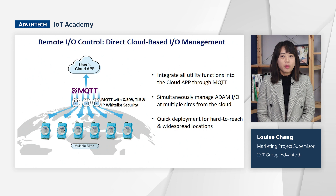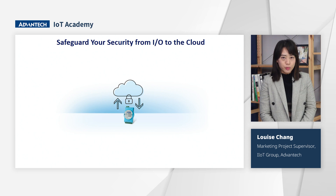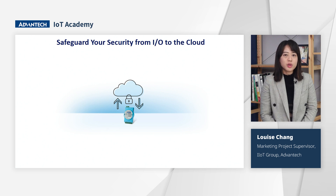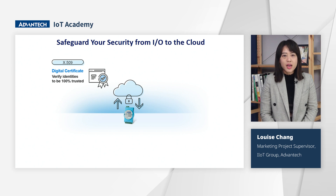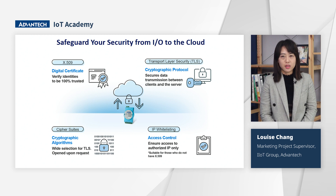This mass deployment capability is particularly advantageous for locations that are challenging to access or widely dispersed. As all modules are manageable and accessible through the cloud, security becomes paramount for the Cloud I.O. application. Four key security features of ADAN Cloud I.O. are X.509, TLS, Cipher Suite, and IP whitelisting access control. X.509 serves as a digital certificate, ensuring device trustworthiness within the internet's public networks.